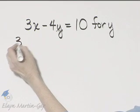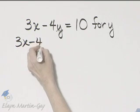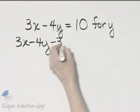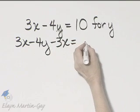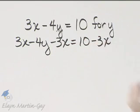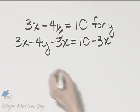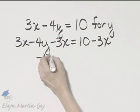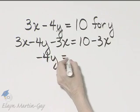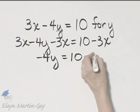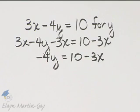Here's my left side, 3x minus 4y. I'll subtract 3x. And on the right side, I'll subtract 3x. The left side, the 3x's subtract out, and I have negative 4y is equal to 10 minus 3x. And now,